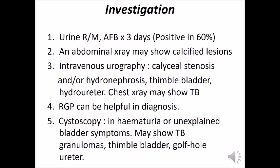Investigations for suspected renal tuberculosis include urine routine and microscopic examination with urine AFB for three consecutive days — positive yield may be around 60 percent. Abdominal X-ray may show calcified lesions. IVU shows caliceal stenosis or hydronephrosis, thimble bladder, hydroureter, and multiple ureteric strictures. Chest X-ray may show pulmonary tuberculosis. RGP can be helpful when IVU does not give proper delineation. Cystoscopy in hematuria or unexplained bladder symptoms may show tuberculous granulomas, thimble bladder, or a golf-hole ureter.